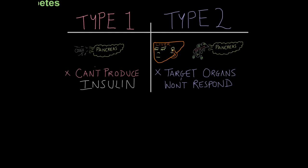Firstly, type 1 diabetics cannot produce the hormone insulin. So you can see the spluttering pancreas here cannot produce that hormone. Type 2 diabetics, however, can produce the hormone insulin, it's just that their organs have stopped responding to it. So the target organs will not respond to insulin.